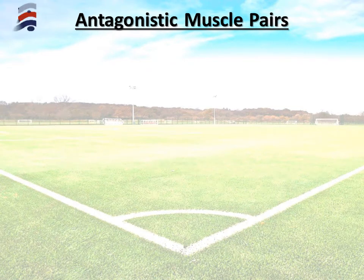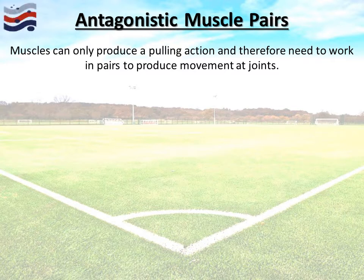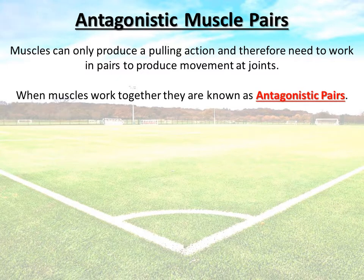Now we know the name, location and type of movement those muscles create, let's look at muscles working together in pairs. As said before, muscles only produce a pulling action — they never push. Therefore they need to work together, because when one muscle pulls, its partner muscle must be ready to pull the limb in the opposite direction to return to the original position. When muscles work together, they're known as antagonistic pairs.